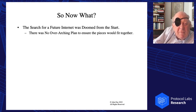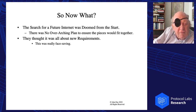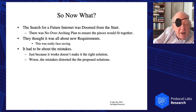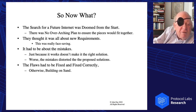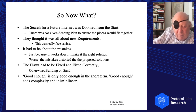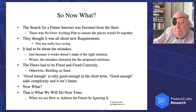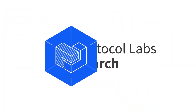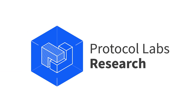The search for a future internet was doomed from the start — there was no overarching plan to ensure the pieces would fit together. It had to be about the mistakes, about the flaws. Just because it works doesn't make it the right solution. The flaws had to be fixed correctly; otherwise we were building on sand. Good enough is only good enough in the short term — good enough adds complexity, and the complexity it adds is not linear. So now what? Well, that's what we'll talk about next time. Thank you again for joining us today, John.